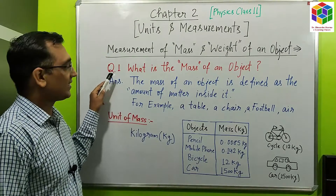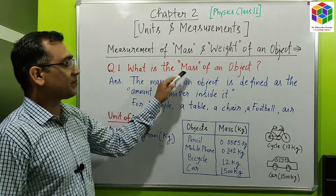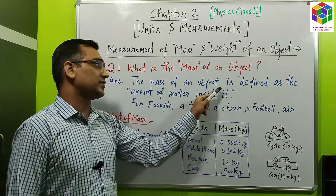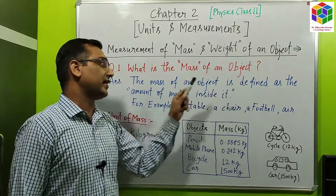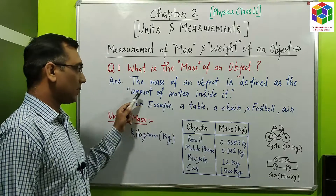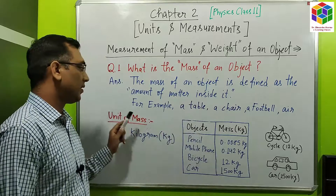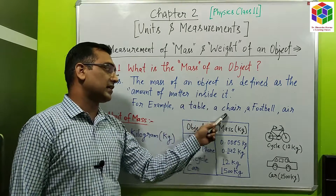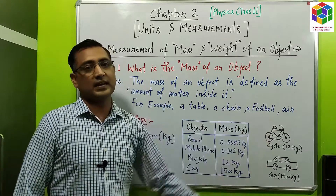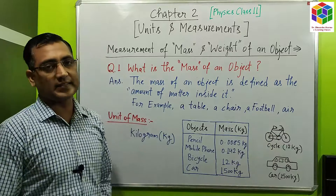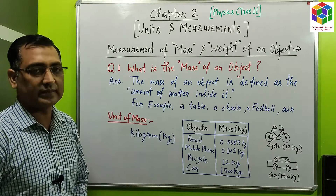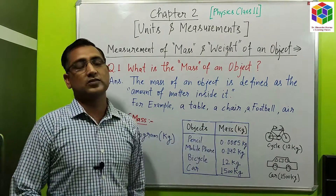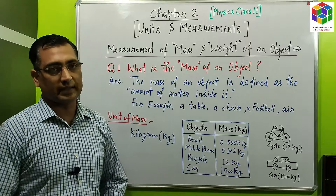First of all, we will discuss what is the mass of an object. The mass of an object is defined as the amount of matter inside it. For example, a table, a chair, a football, and even the air itself. The air also consists of mass because the air consists of atoms.